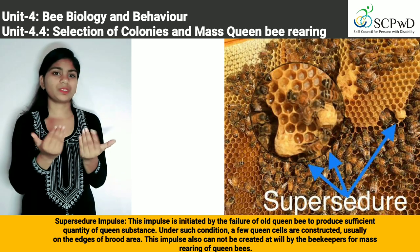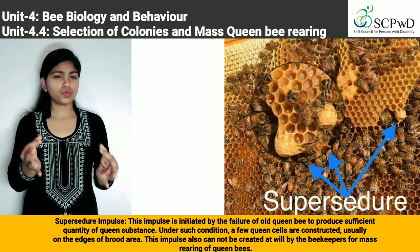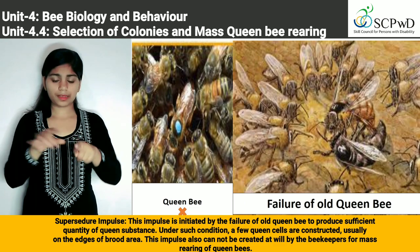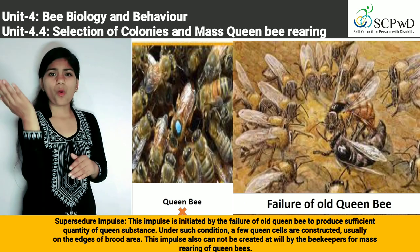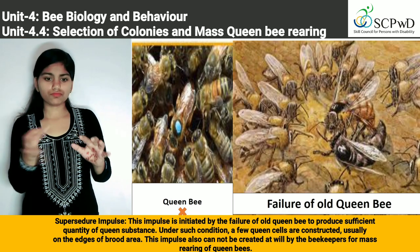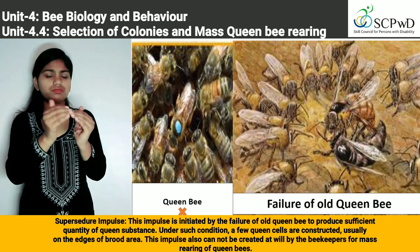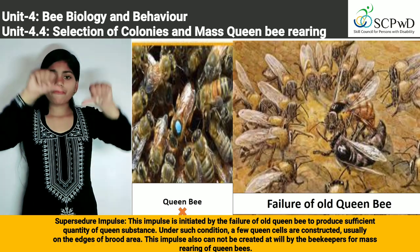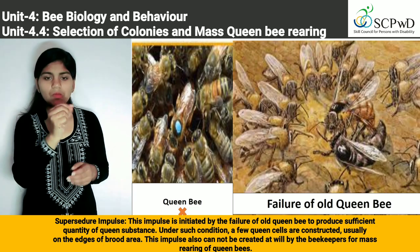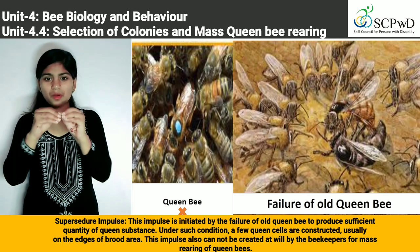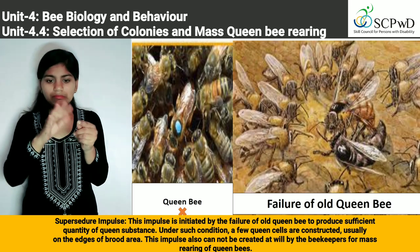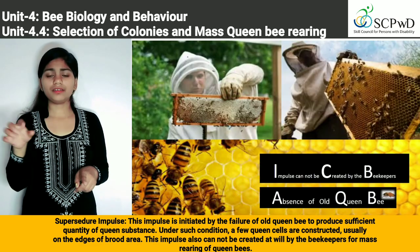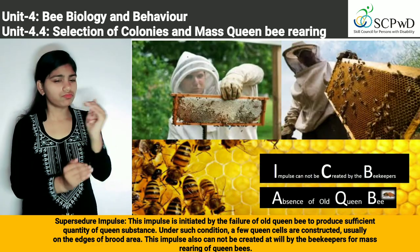The supersedure impulse is initiated by the failure of an old queen bee to produce a sufficient quantity of queen substance. Under such conditions, a few queen cells are constructed, usually on the edges of the brood area. This impulse also cannot be created at will by beekeepers for mass rearing of queen bees.